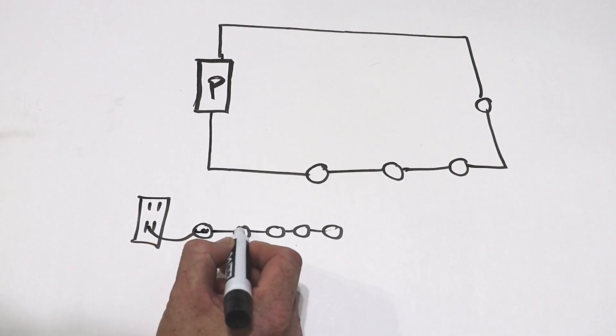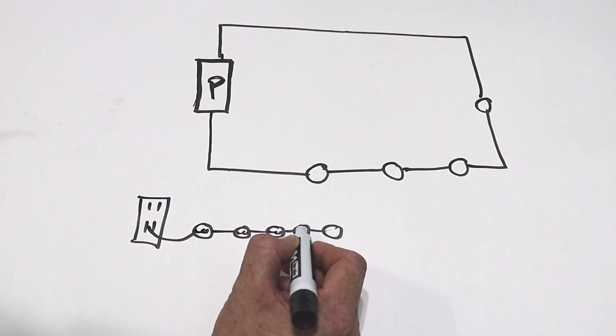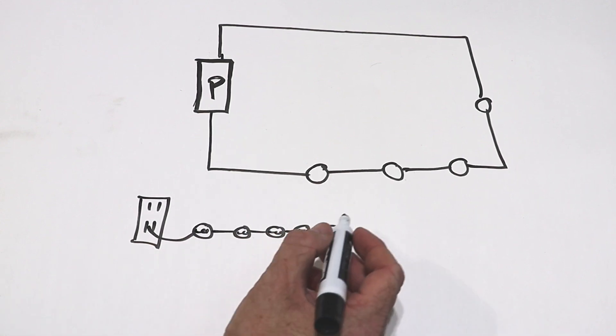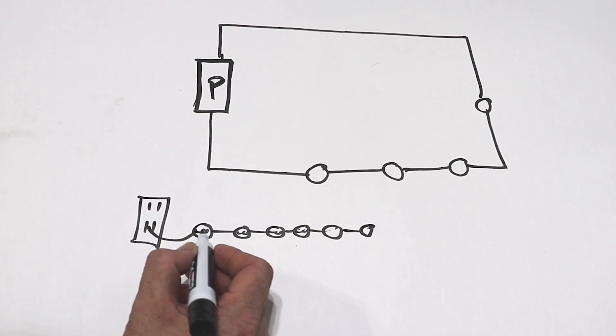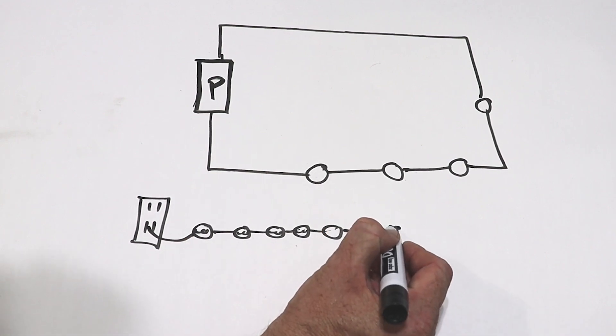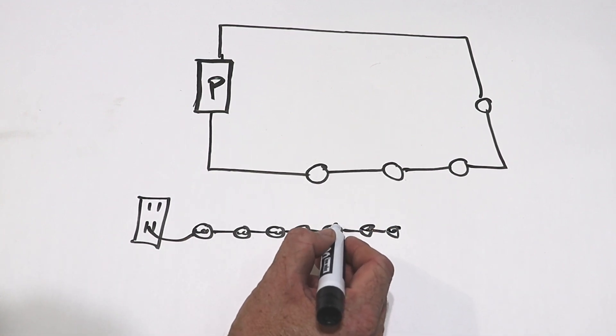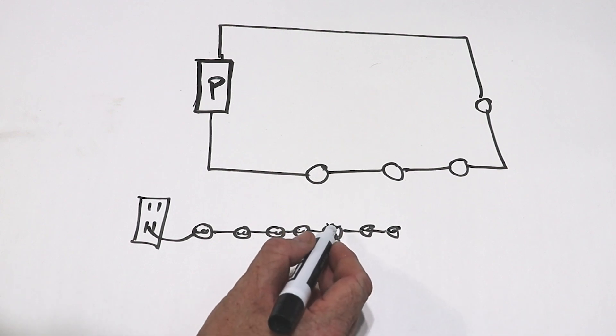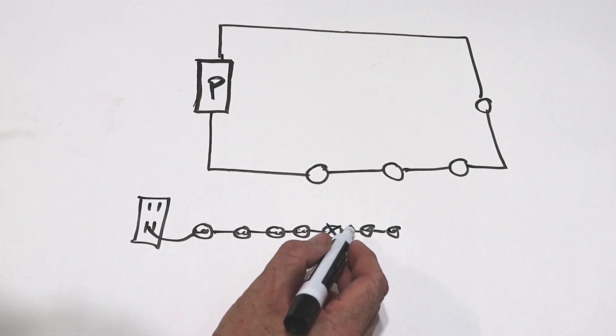That's because there's a filament in each one of these bulbs, and that filament is actually creating a jump from one wire to the other. And so if any of these filaments burn out, like let's say we lose power in this one bulb, now you've broken your circuit.